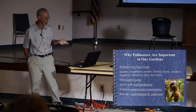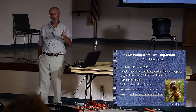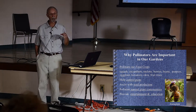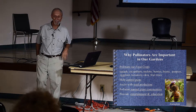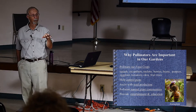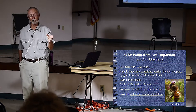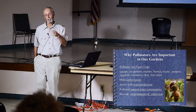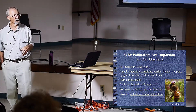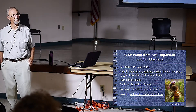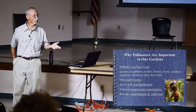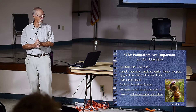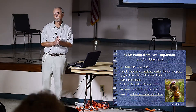Why are pollinators important in our gardens? We all know that they pollinate a lot of our food crops — squashes, cucumbers, melons, berries, beans, eggplants — anything that has a fruit on it that we're seeking to eat. When the plant flowers, there have to be pollinators there to transfer the pollen to the appropriate part of the flower for fertilization to take place. The fruit is like an enlarged ovary, and that requires pollination from some sort of pollinator.